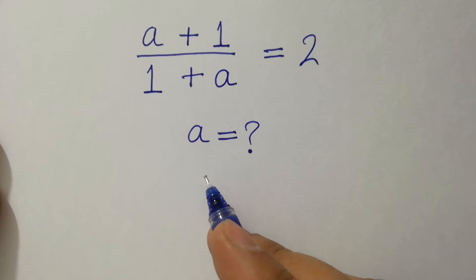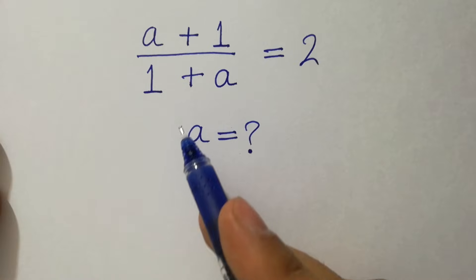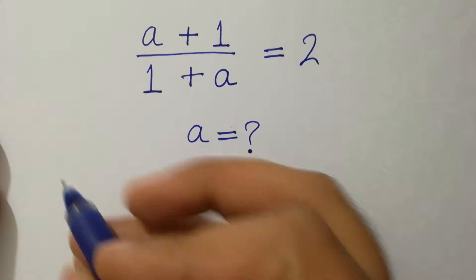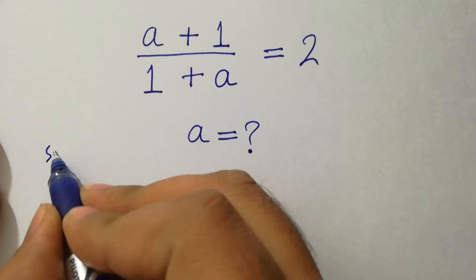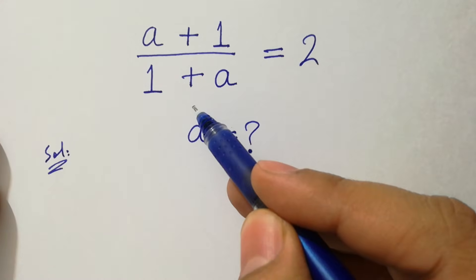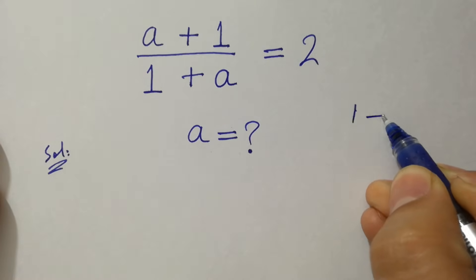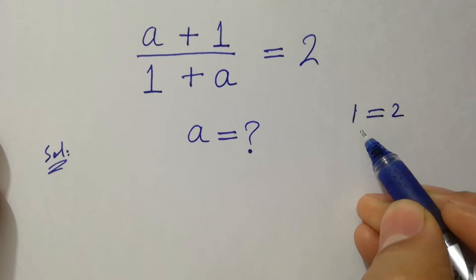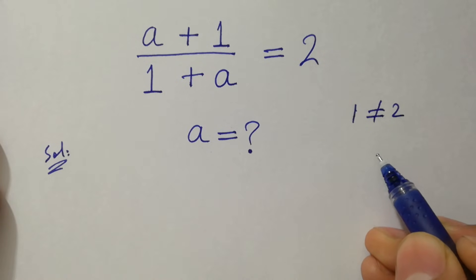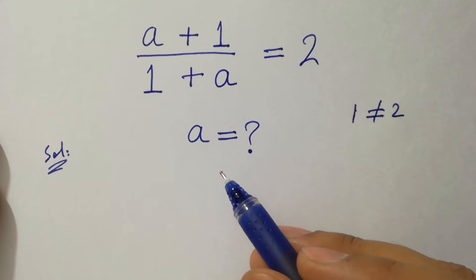Hello friends, find the value of a if (a+1)/(1+a) = 2. If we cancel out a+1 and 1+a, we get 1 = 2, where 1 does not equal 2, which means we can't solve this problem simply. But let's see how to solve this kind of problem.